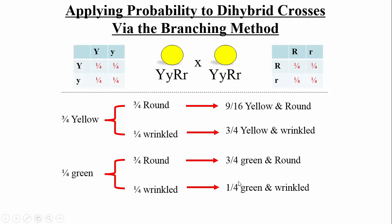Note: there's a typo in the problem — the denominators in the final three branches should all be sixteen, not four. After correcting those to sixteenths, you get the proper 9:3:3:1 ratio. The branching method is very powerful and often faster than doing a full Punnett square.